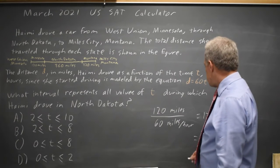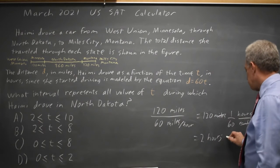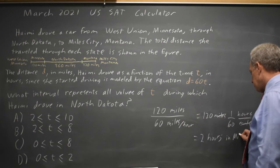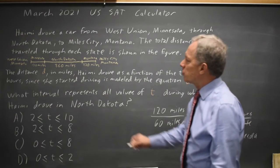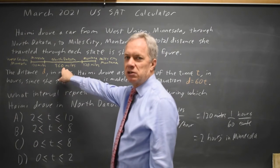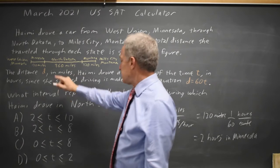So we drove 2 hours in Minnesota. Similarly, 360 miles in North Dakota, 360 divided by 60 is 6.